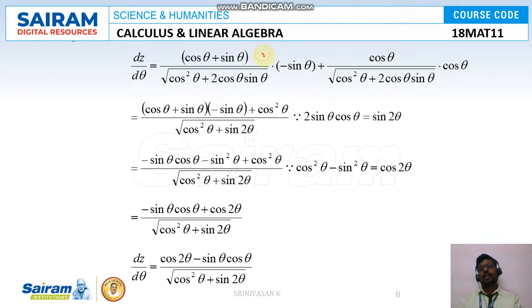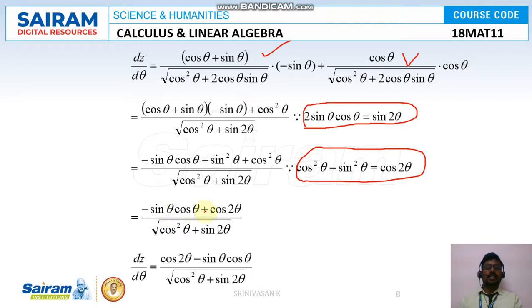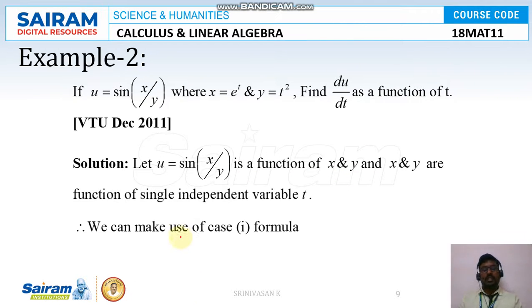Substituting x = cosθ and y = sinθ everywhere, we get (cosθ + sinθ)(−sinθ) + cos²θ in the numerator. Since 2sinθcosθ = sin2θ, we get −sinθcosθ + cos²θ in the numerator. The denominator becomes √(cos²θ + sin2θ). Using cos²θ − sin²θ = cos2θ, dz/dθ = (cos2θ − sinθcosθ) / √(cos²θ + sin2θ). That is the solution.